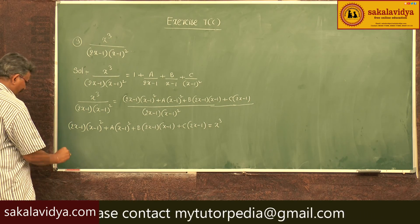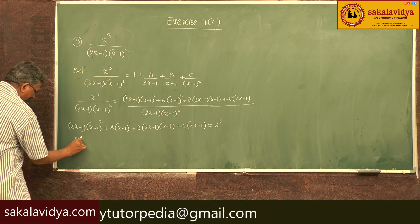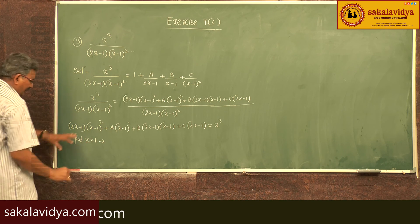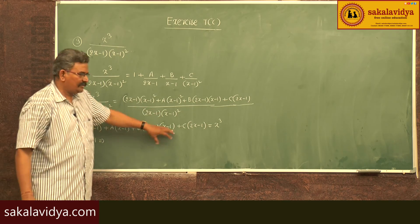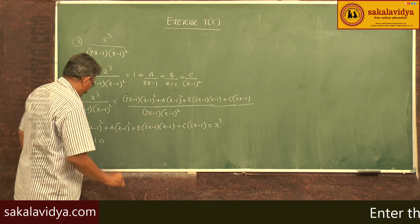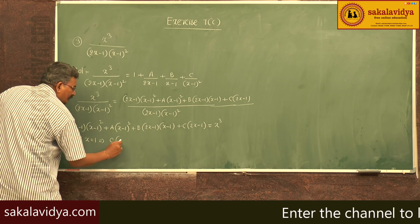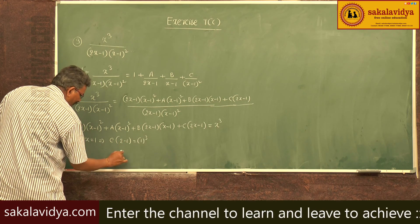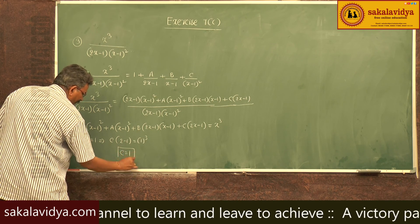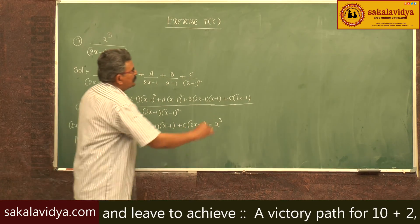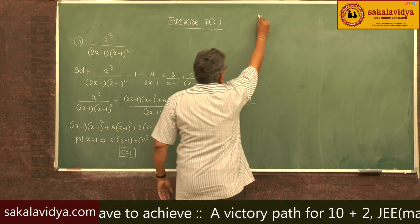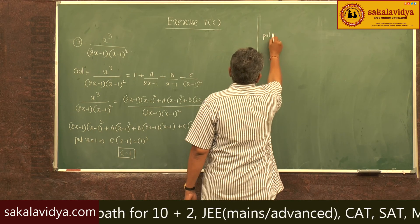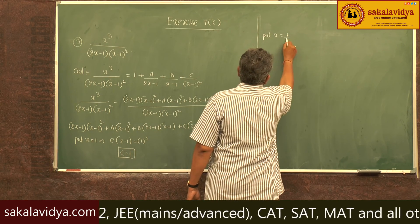If you substitute x equal to 1, the first three terms become 0. So C of (2 minus 1) equals 1 cube, which gives C equals 1. Now let us substitute x equal to 1 by 2.